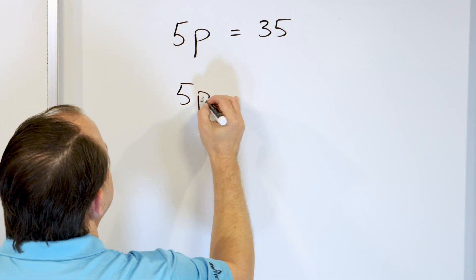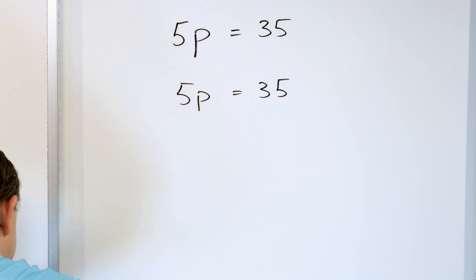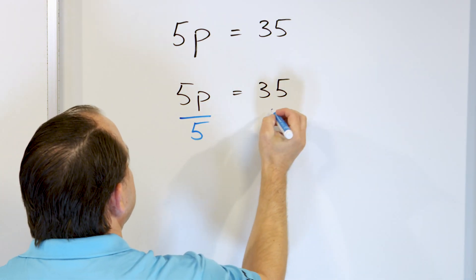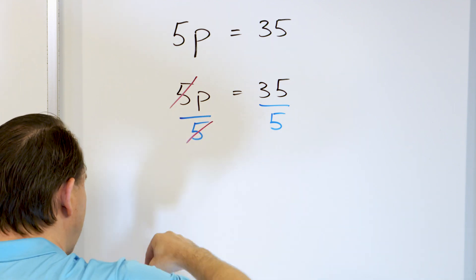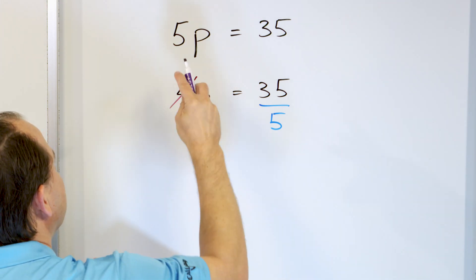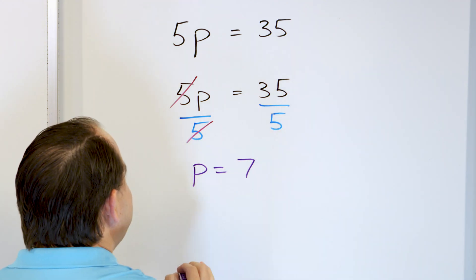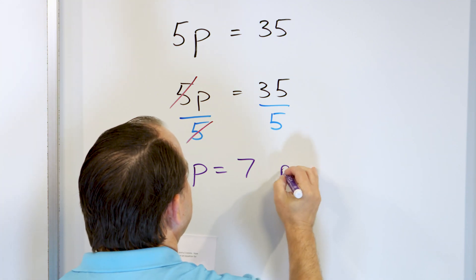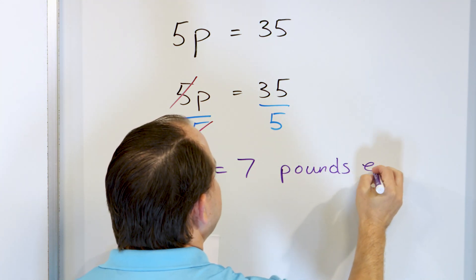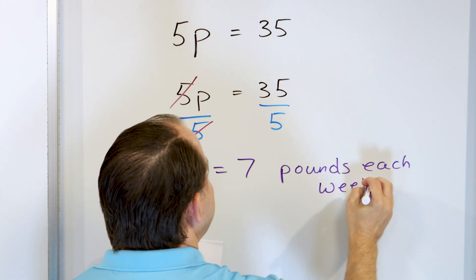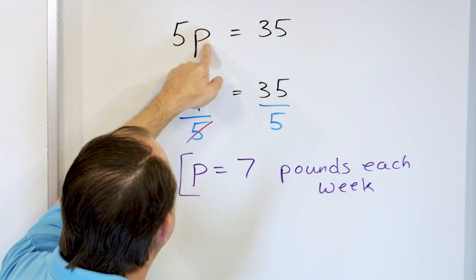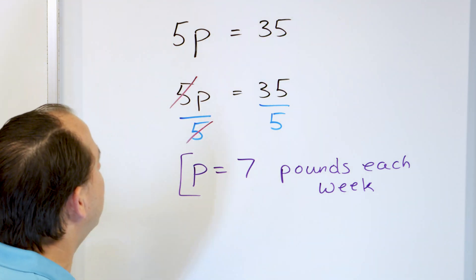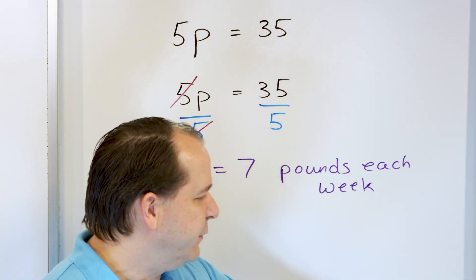So let's rewrite the equation and solve. On the left-hand side we have multiplication going on, so we have to do the opposite, which is division. We divide both sides by five. The five on the top cancels with the five on the bottom. All we are left with on the left is just P. 35 divided by five is seven. So he eats seven pounds of food each week. If he eats seven pounds each week, seven multiplied by five would mean 35 pounds total over five weeks — that's why he has to buy a 35-pound bag every five weeks.